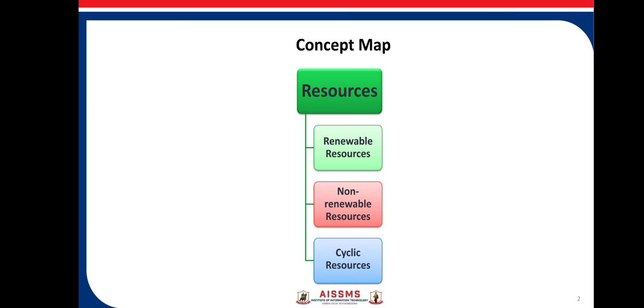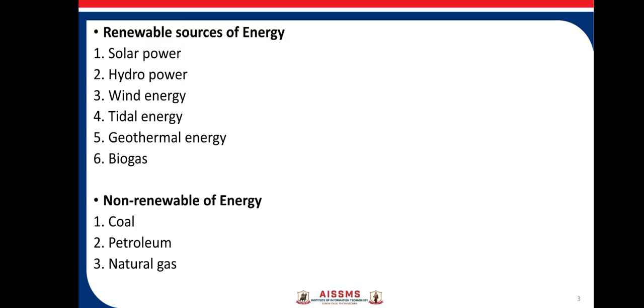From the concept map, it is clear that there are three types of resources: Renewable Resources, Non-Renewable Resources, and Cyclic Resources.